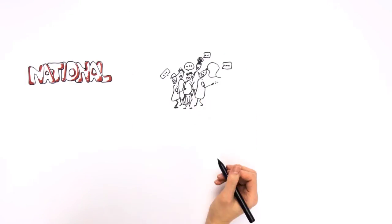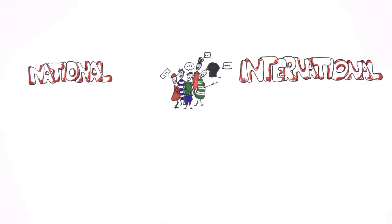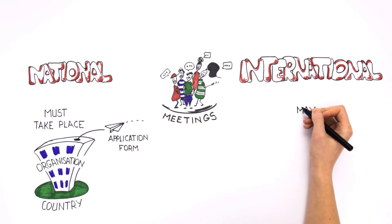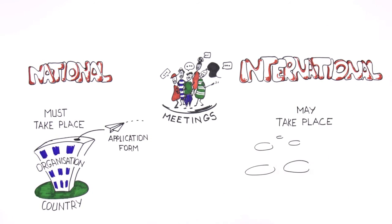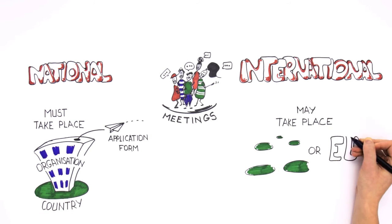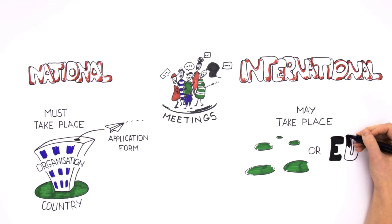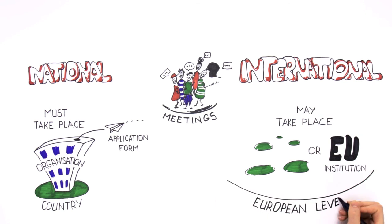National meetings of the project must take place in the country of the applicant organisation. International meetings may take place in any of the programme countries involved in the project or even at the seat of an EU institution, if dialogue with decision makers at European level is part of the project.